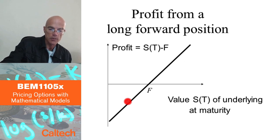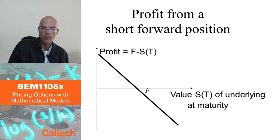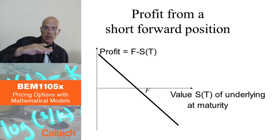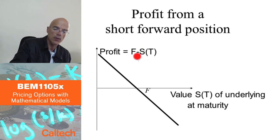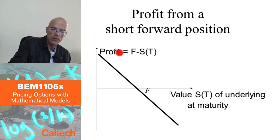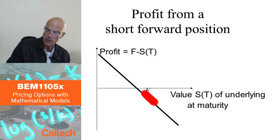The x-axis here is the value S(T) of the underlying at maturity, and the y-axis is your profit or loss. The profit or loss from a short forward position is just a mirror image around the x-axis — a downward sloping line, which is the negative of the long position's profit. If you are short, you receive F cash but have to deliver the underlying, so the seller makes a profit when the underlying price is less than F, and loses when it is greater than F.